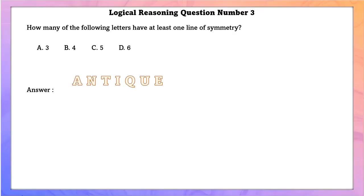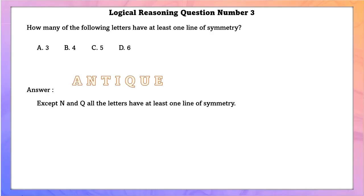Logical reasoning question number 3. How many of the following letters have at least one line of symmetry? Except N and Q, all the letters have at least one line of symmetry.